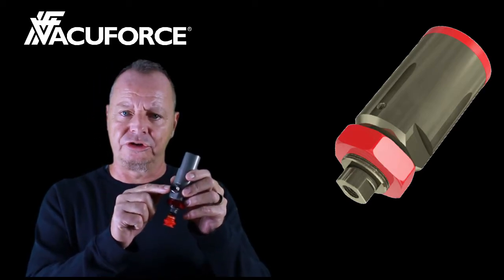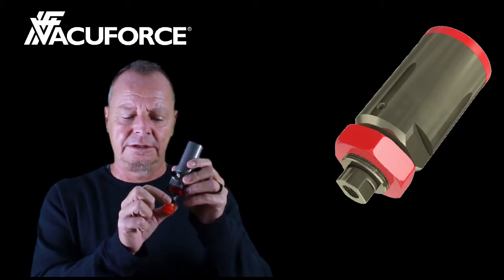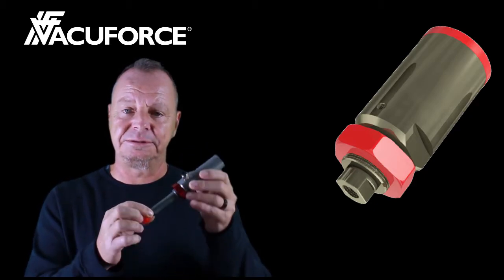When vacuum is applied to this port, the cylinder rod will extend. This particular model has a 2-inch stroke or 50-millimeter stroke.